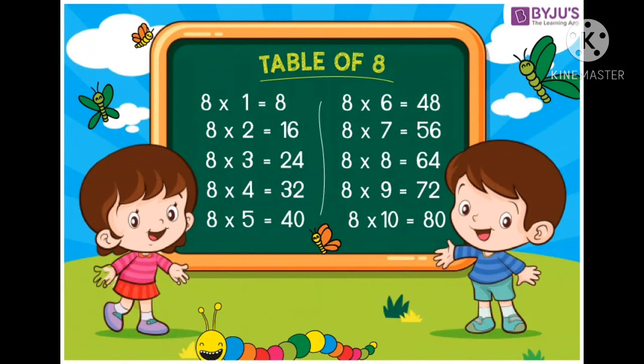8 sixes are 48, 8 sevens are 56, 8 eights are 64, 8 nines are 72, 8 tens are 80.